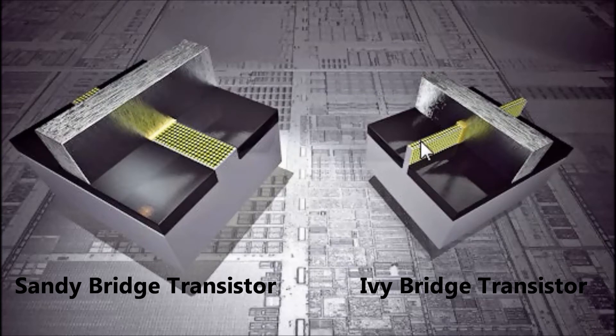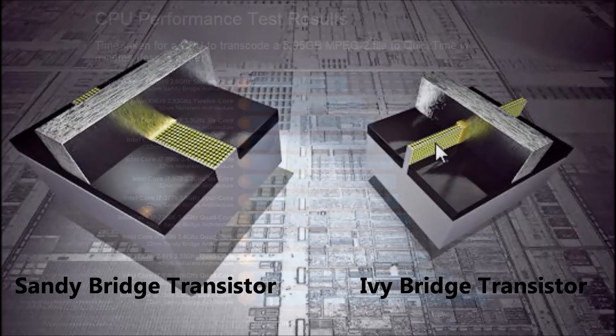One, two, and another one on the other side here. In other words, a Trigate transistor significantly widens the path that the current flows down, so that the current stays on track and does not leak to an adjacent transistor. This is extremely significant because the smaller the transistor, the less power the CPU consumes, and the more transistors you can fit in a given space, so the greater the processing power of that CPU.